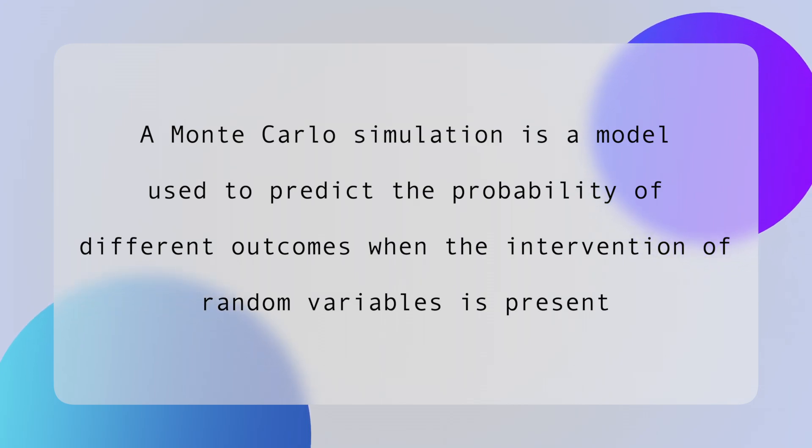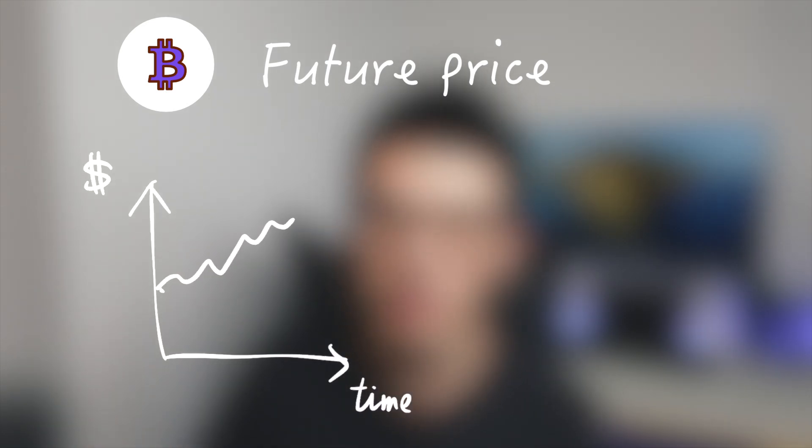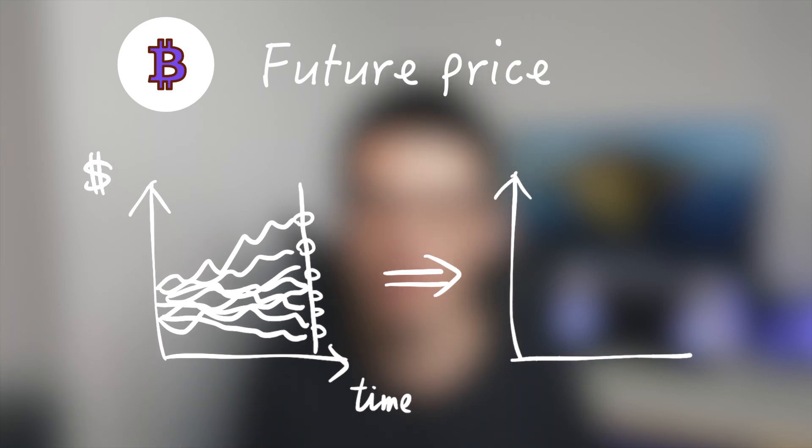So what is Monte Carlo simulation? The official definition is, a Monte Carlo simulation is a model used to predict the probability of different outcomes when the intervention of random variables is present. So what does that mean? Generally speaking, it's a model to help people find all the possible outcomes and their probability. For example, if we want to predict the future price of Bitcoin, what we need to do is to use the Monte Carlo method to predict many different prices, and summarize the probability of each price, then we can get the probability distribution graph of the future price of Bitcoin.